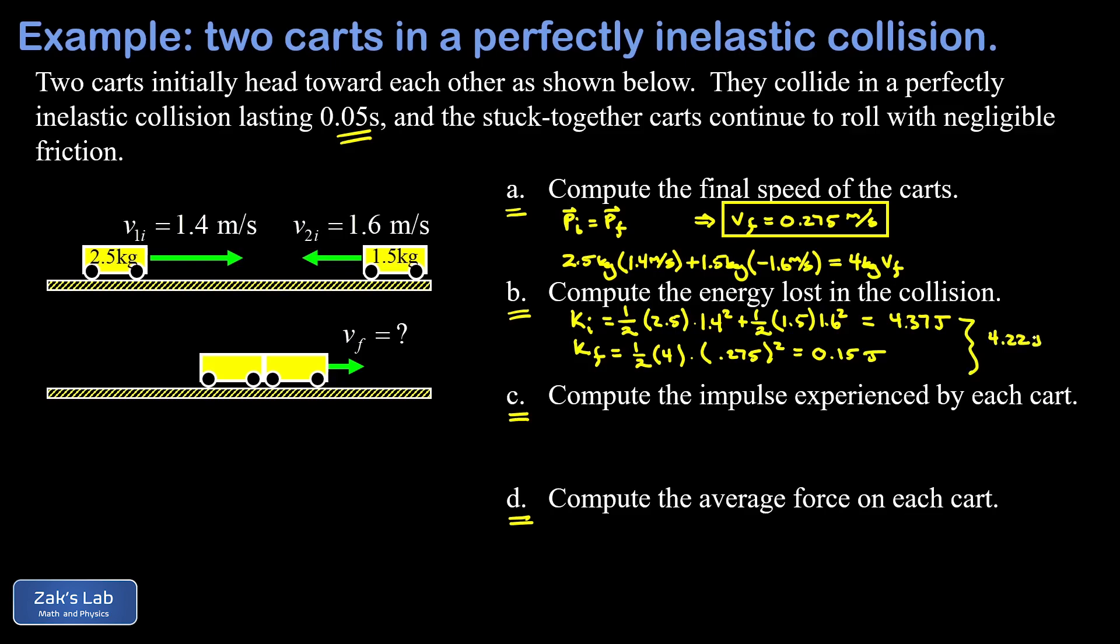Next, in part c, we're going to find the impulse experienced by each of these individual carts. Impulse is just a name for the change in momentum. The impulse experienced by cart number one, the 2.5 kilogram cart, is going to be the final momentum of that particular cart minus its initial momentum - p1 final minus p1 initial. The final momentum of this cart, when it's stuck to the second cart but we're still talking about just that mass of 2.5 kilograms and that final speed of 0.275 meters per second, and then we subtract from that the initial momentum for that cart which was 2.5 times 1.4 meters per second. This gives us a change in momentum or an impulse of negative 2.81 kilogram meters per second.